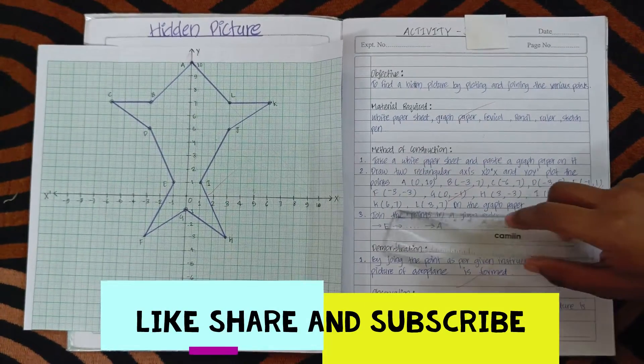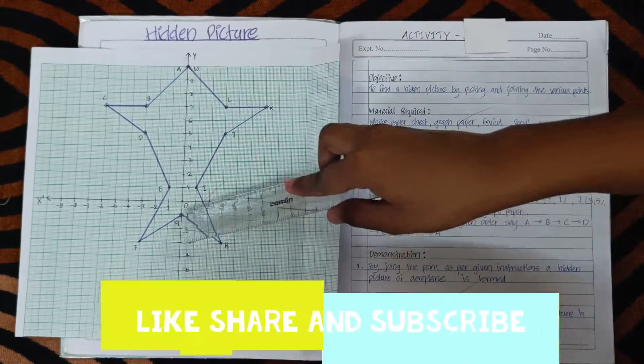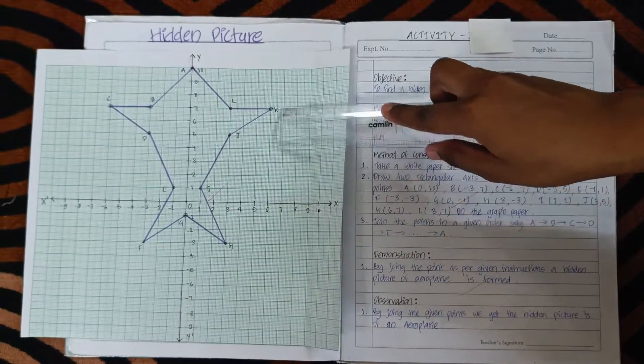Now, join all these points A, B, C, D, E, F, G, H, I, J, K, and L.